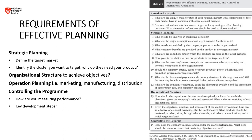Organizational structure is used to achieve objectives. What are you trying to accomplish? What are the short-term and long-term goals? Operational planning includes marketing, manufacturing, and distribution. And lastly, controlling the program — how are you going to measure whether or not this is successful, and how are you going to measure whether or not you're performing well?